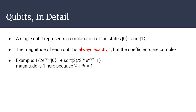How does a qubit work? A single qubit represents a specific combination of the states 0 and 1. However, the magnitude of the combination is always exactly equal to 1. The coefficients are not just real numbers — in general they're complex numbers. For example, consider (1/2)·e^(2πi/5)|0⟩ + (√3/2)·e^(4πi/5)|1⟩. The magnitude is 1 because (1/2)² + (√3/2)² = 1/4 + 3/4 = 1.